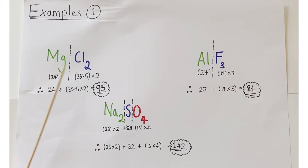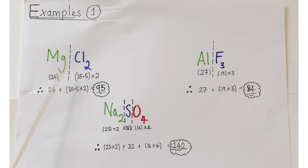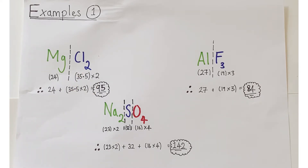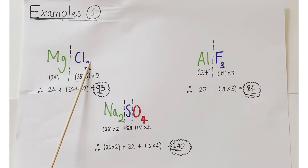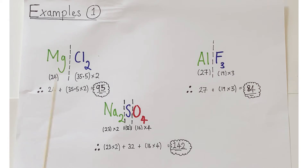Let's take magnesium chloride as our first example. Magnesium is one element and chlorine is a different element. The chlorine has a subscript 2, which only applies to the chlorine, not the magnesium — so there is one magnesium and two chlorine atoms. Looking up the relative atomic masses: magnesium is 24 and chlorine is 35.5. With two chlorine atoms, that's 35.5 multiplied by 2. So the calculation is 24 + (35.5 × 2) = 95. That's the relative formula mass of magnesium chloride.